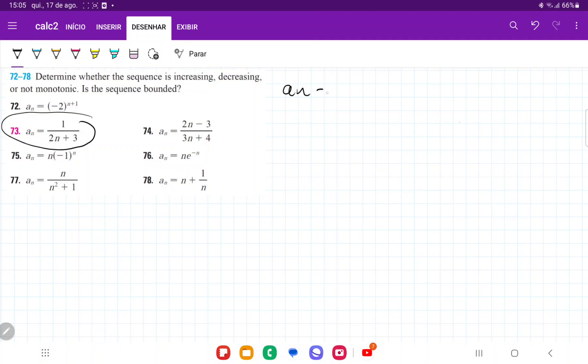We have an is equal to 1 over 2n plus 3. And the way that we're going to prove that this is either always decreasing, always increasing, or not monotonic, is we're going to approximate this using the function y is equal to 1 over 2x plus 3.